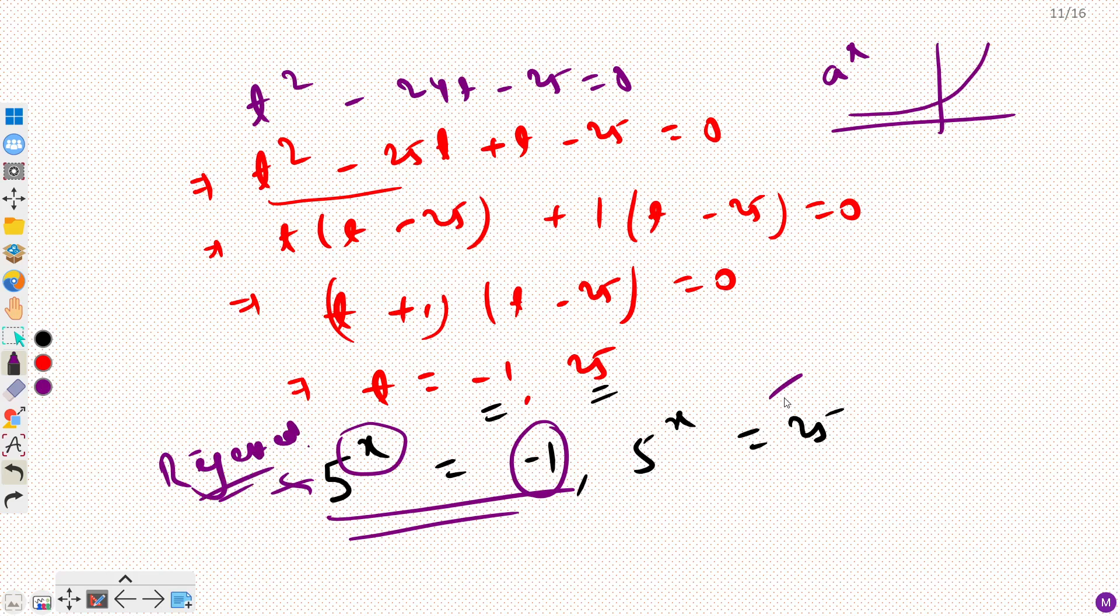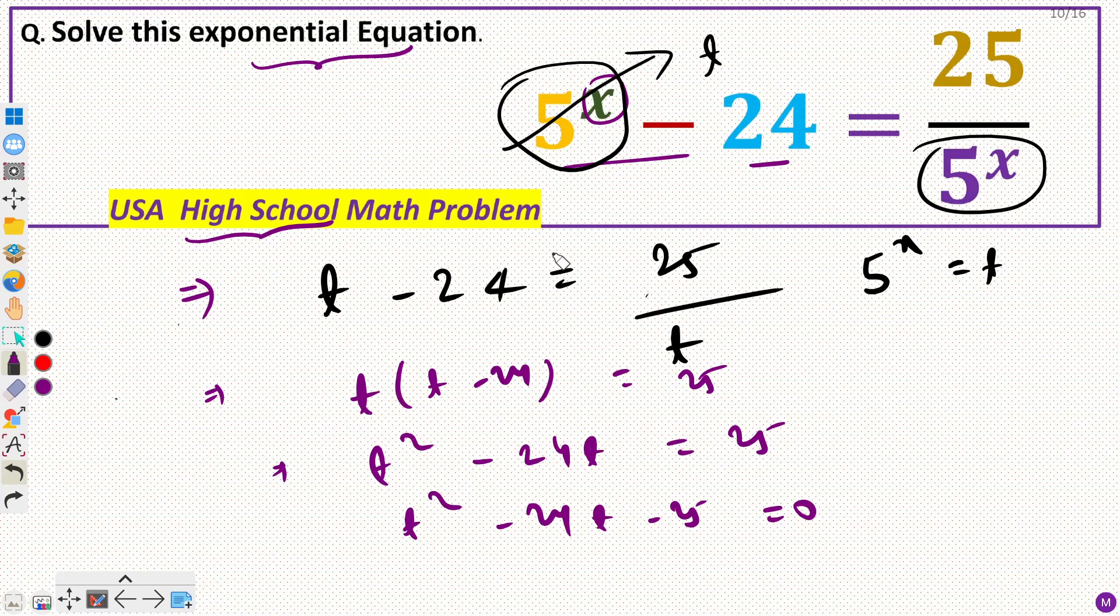Now let us discuss this one. This is quite straightforward. x equals 2 is my solution. If you put x equals 2, that would be 5 squared, which equals 25. So x equals 2 is my only solution.